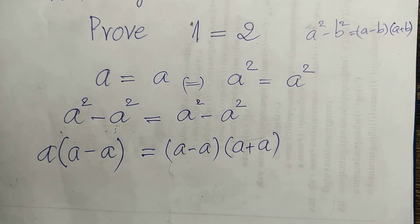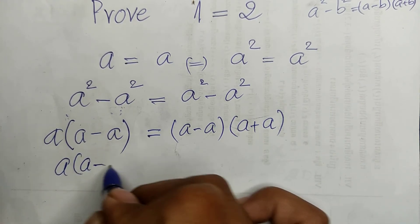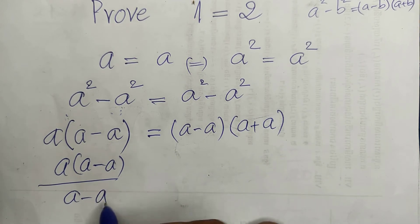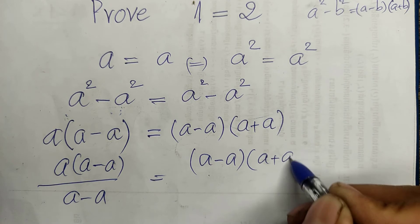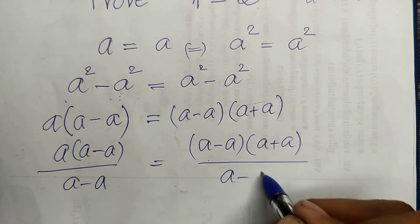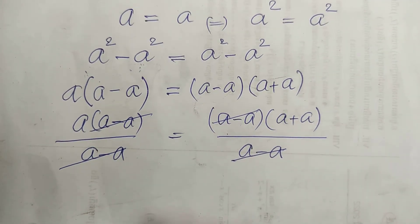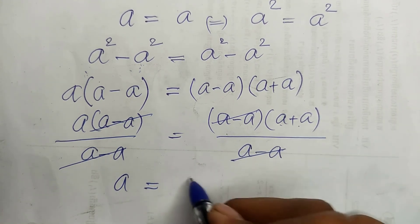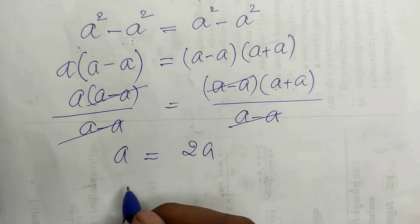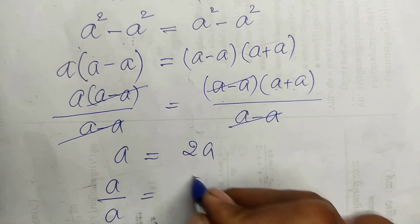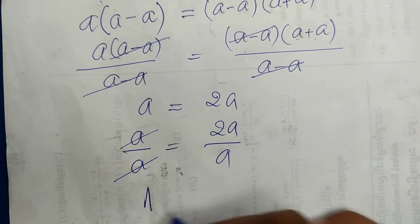Now I divide both sides of this equation by (a minus a), so we get a multiplied by (a minus a) divided by (a minus a) equals (a plus a). Now I simplify it — we get a is equal to a plus a, which gives us 2a. Now I divide both sides by a, so we get 1 equals 2.